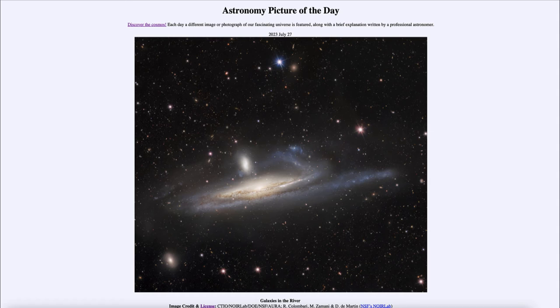Now how do we have galaxies in the river? Well, the river is actually the constellation of Eridanus, and here we see a spiral galaxy located in that constellation which is known as NGC 1532. We note the distortion in this galaxy.